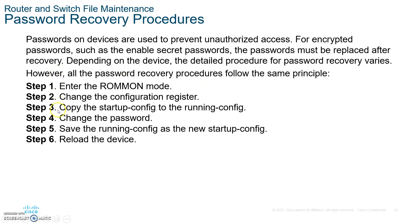Password recovery — please write the following steps down. Step one: enter ROM monitor mode by pressing Control-Break keys while the system is booting. Turn the system on, and within 30 seconds press Control and the Break key. You'll see the ROM monitor prompt with a greater-than sign. Step two: change the configuration register by typing confreg 0x2142, then type reset to reboot.